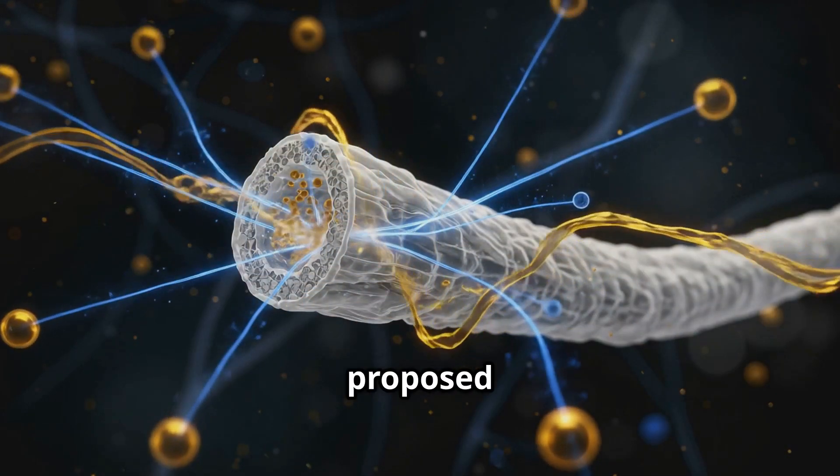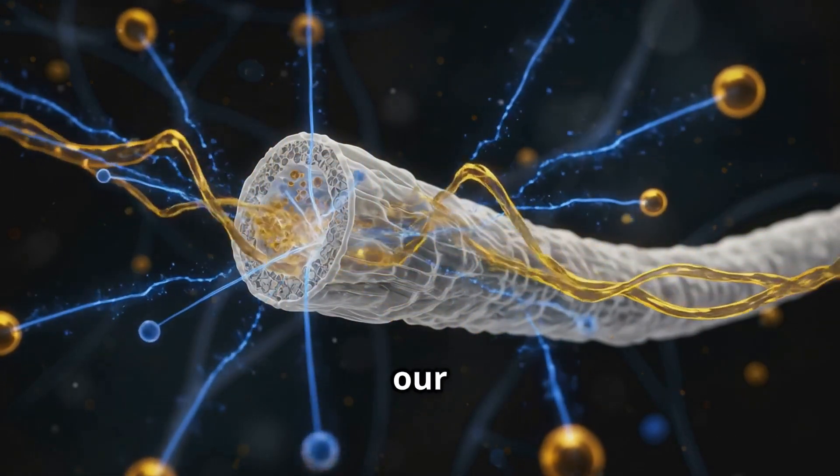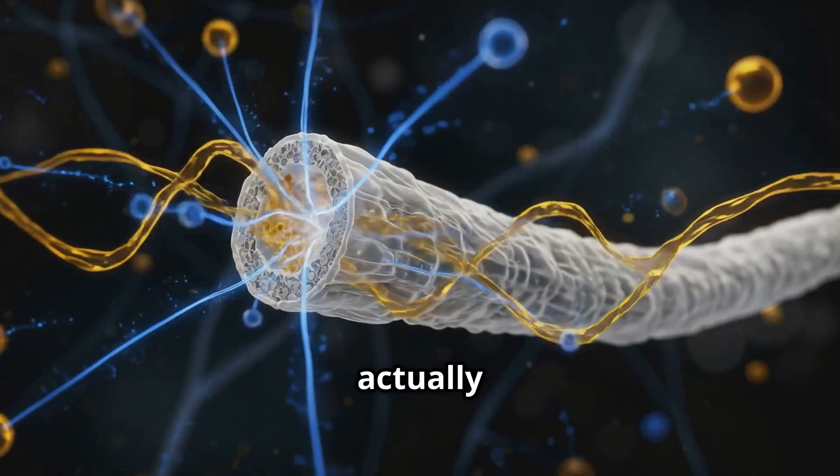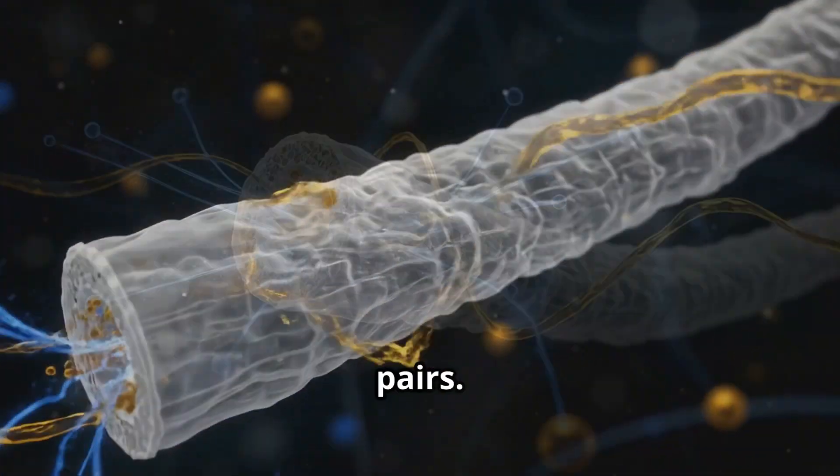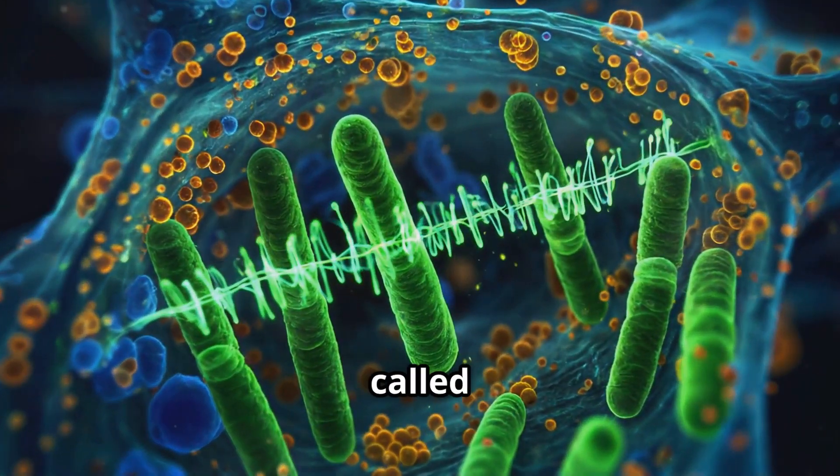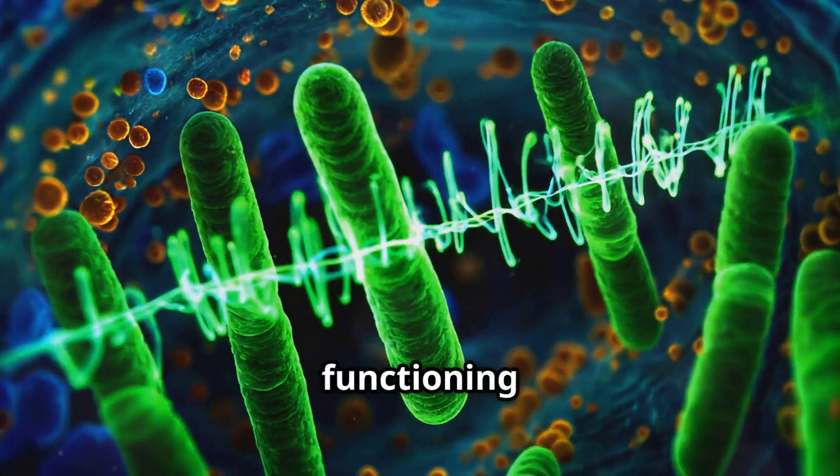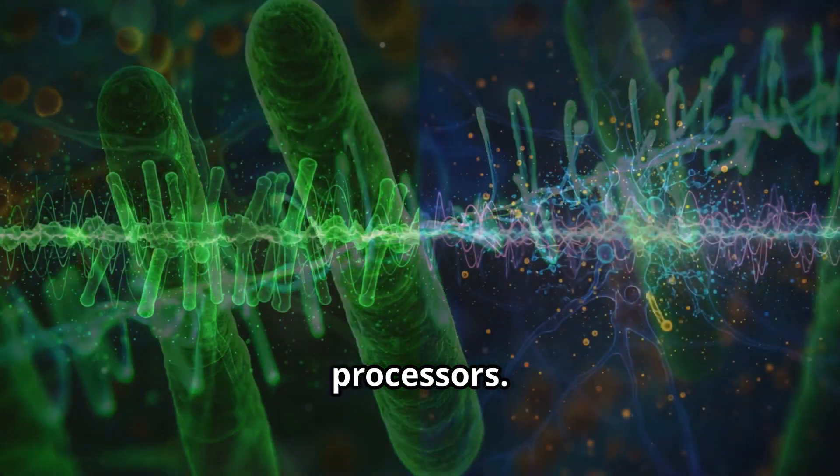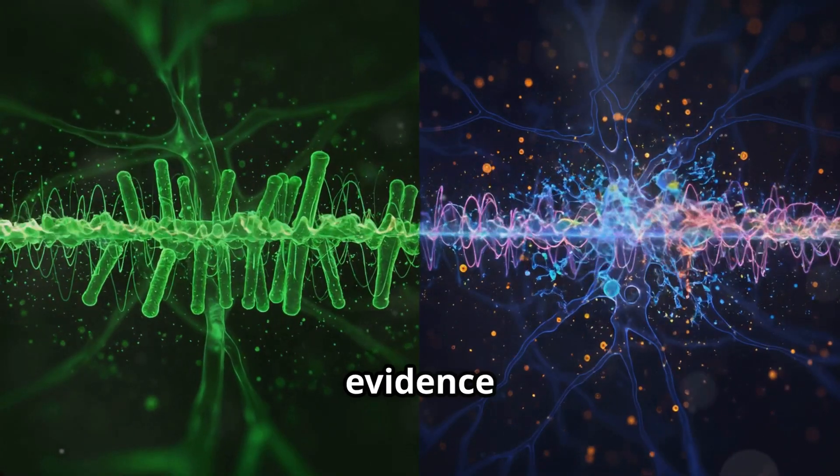Researchers have proposed something extraordinary: our brain's myelin sheaths might actually be generating entangled photon pairs. Another groundbreaking theory suggests that tiny structures inside our neurons called microtubules might be functioning as quantum processors.